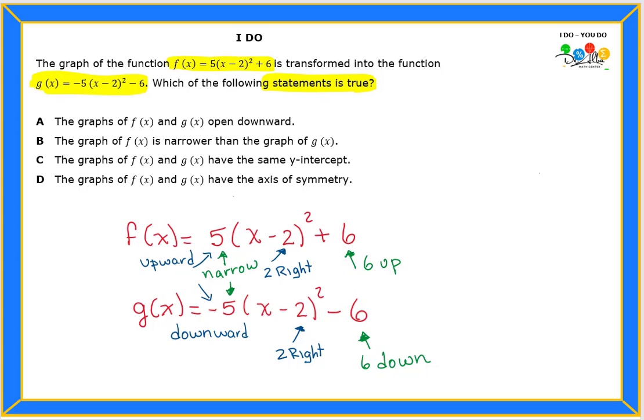But neither one will be more or less narrow than each other. Why? Because they both have 5. So even though one is going to be facing upward and the other one downward, the wideness of both functions will be equal. So be very careful with that. How do we identify? Let's look at the answer choices.